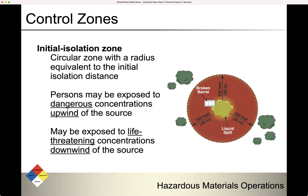The initial isolation zone, also called the hot zone — the EPA calls it the initial isolation zone. This is the circular zone with a radius equivalent to the initial isolation distance. Remember, people may be exposed to dangerous concentrations upwind of the source, and they may also be exposed to life-threatening conditions downwind of the source. That's why we isolate in a circle.